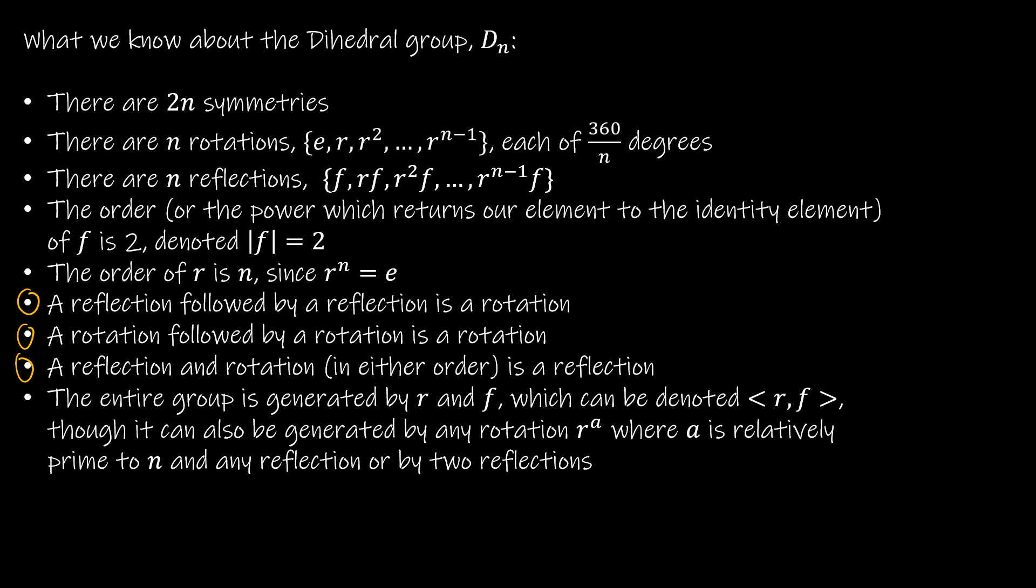And the very last thing we haven't talked about at all is that the entire group is generated by R and F. Now, if we go back to that Cayley diagram that we had. We had E, R, R-squared, R-cubed, and then we had F, and then we had RF over here, R-squared F, R-cubed F, and then we had, remember, the reds here in this order, in this order, and this one went in the opposite order.